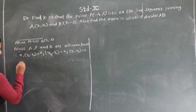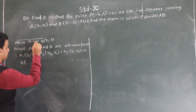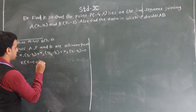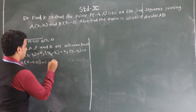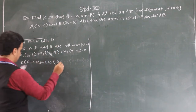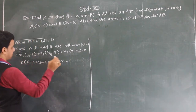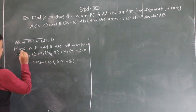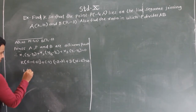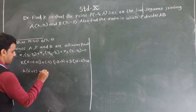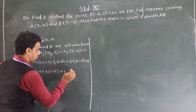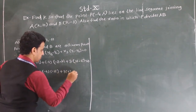So x1 is K, y2 minus y3 is 6 minus (-8), plus x2 which is -4, times y3 minus y1 which is -8 minus 10, plus x3 which is 3, times y1 minus y2 which is 10 minus 6, equals 0. So we have K(6+8) - 4(-8-10) + 3(10-6) = 0.